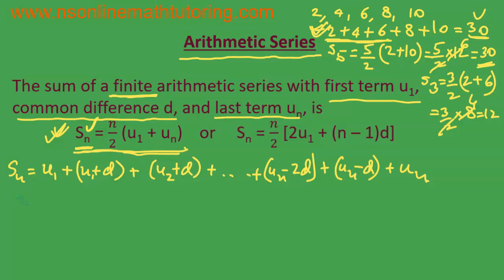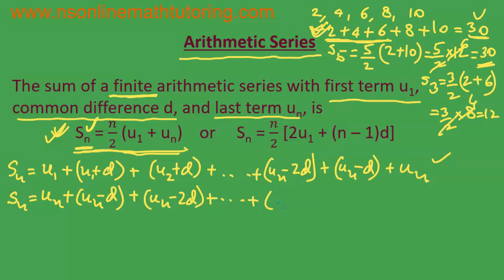Now, Sn can also be written by starting from the last term — we simply flip the terms. So Sn = un + (un − d) + (un − 2d) + ... continuing down to the third term (u1 + 2d), then the second term, and finally the first term u1.